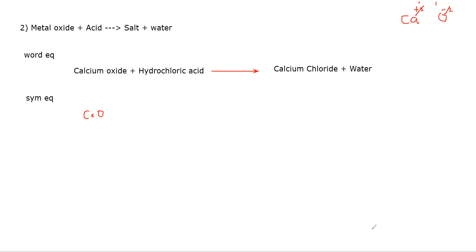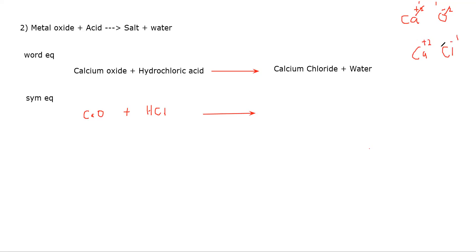The formula for hydrochloric acid is HCl. Calcium oxide plus hydrochloric acid results in calcium chloride. For calcium chloride: calcium is group 2 (plus 2), chlorine is group 7 (minus 1), so the formula is CaCl₂. Plus water, H₂O. This is the symbolic equation, but it must be balanced as well.